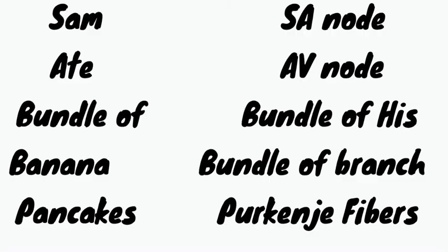The abbreviation is pretty straightforward. For SAM: the S stands for SA node, A stands for AV node. Bundle of stands for Bundle of His — and you won't get confused between His and branch because the abbreviation is bundle of banana, where banana stands for bundle branch. And the last one is pancakes for Purkinje fibers.